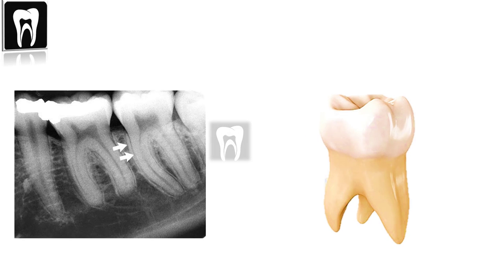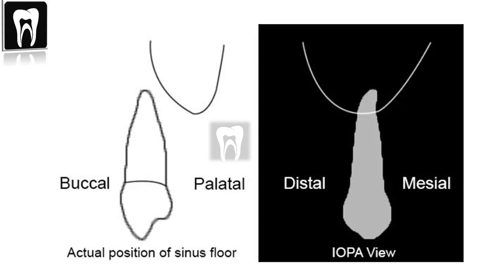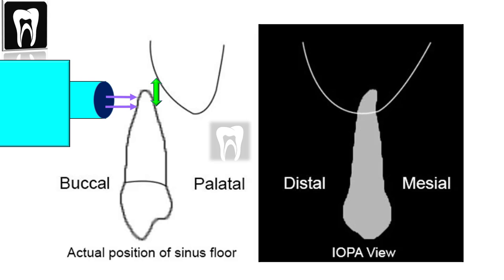An intraoral periapical radiograph or a panoramic radiograph is a two-dimensional image of three-dimensional structures. All the hard tissues are superimposed over one another. For example, on the buccal polytale view, there is a good amount of bone between the premolar root and the maxillary sinus floor. But on an intraoral periapical radiograph, it appears as if the root of the premolar is inside the maxillary sinus due to the two-dimensional nature of the image. This two-dimensional overlap gives different appearances depending on the relationship of these structures.